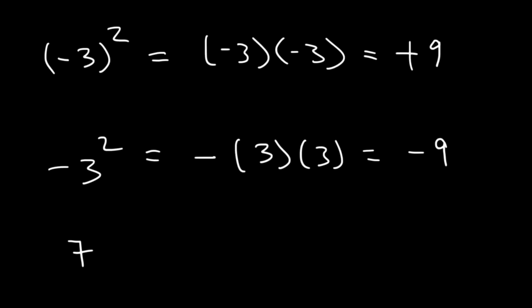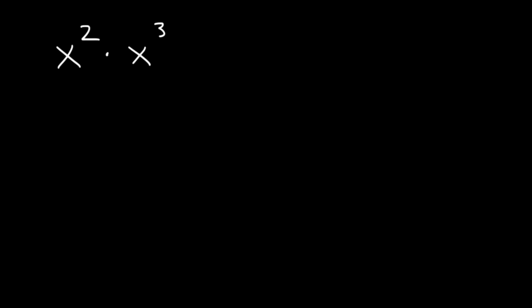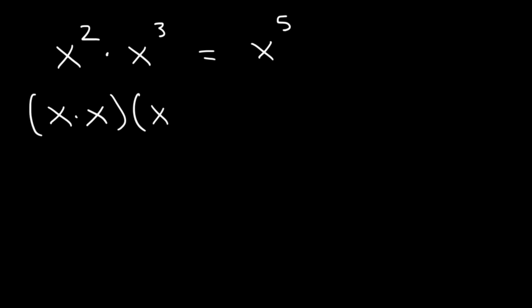In addition, anything raised to the zero power is 1. Now when dealing with variables, when you multiply common variables, you can add the exponents. x squared times x cubed is x to the fifth. x squared means that you're multiplying two x values, and x cubed means three x values, so in total you have five x variables being multiplied together.